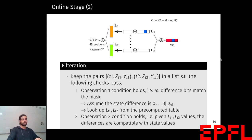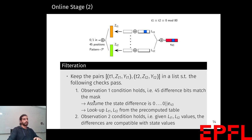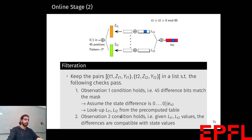We implement this algorithm using a hash table. We first check if the keystream bits at the two times have the desired difference on the 45 fixed bits. Then we assume the internal state difference is only on the 43rd bit of the LFSR, compute LT1 and LT2 using the pre-computed table, check the observation 2 conditions with these values of LT1 and LT2, and verify whether the difference and these values are compatible.